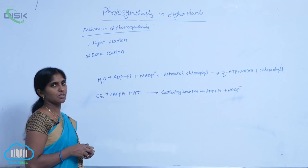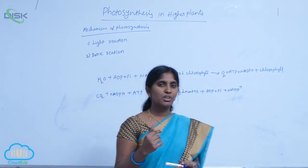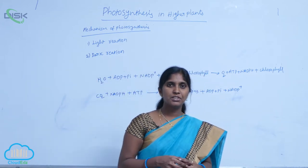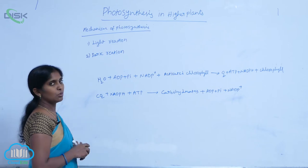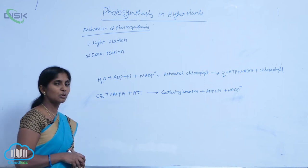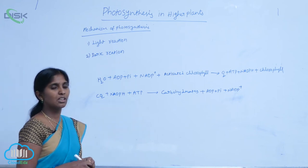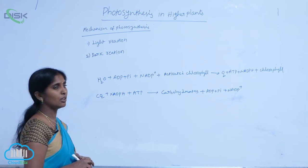Photosynthesis mechanism includes two reactions: light reaction and dark reaction. These two reactions were given by scientist Blackman.